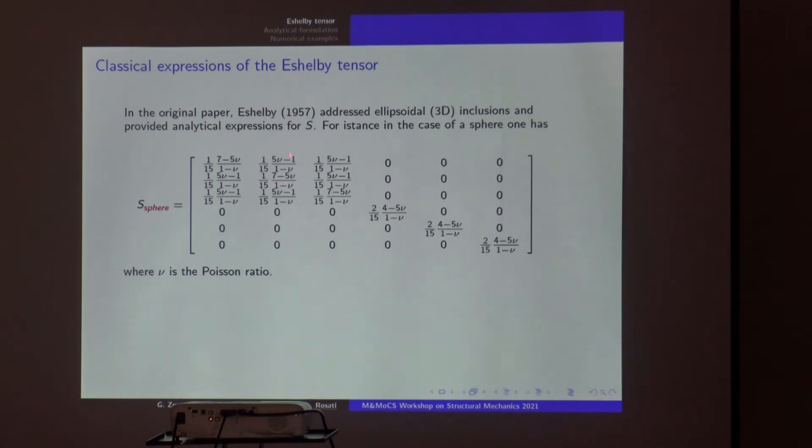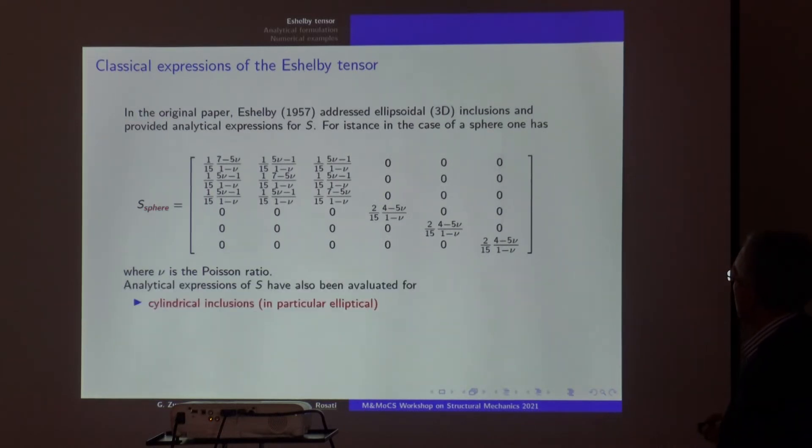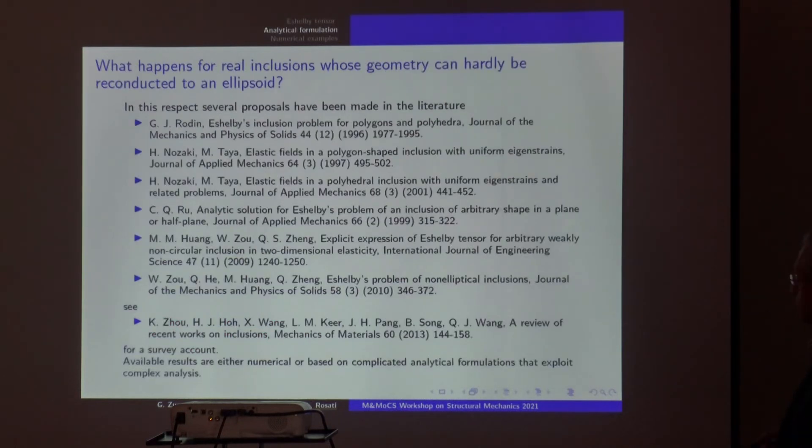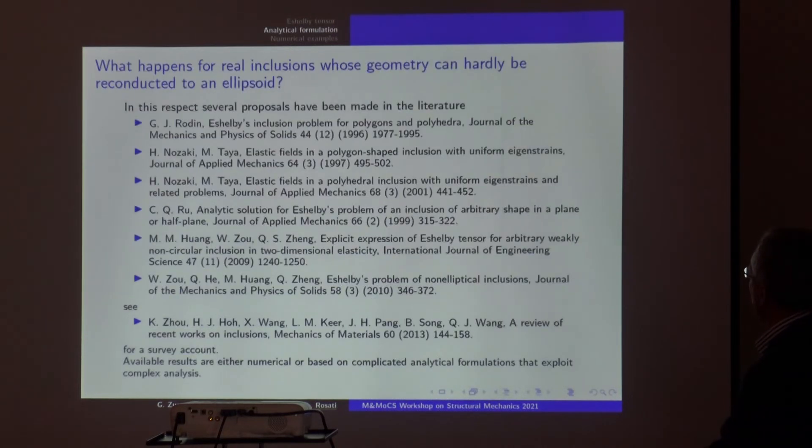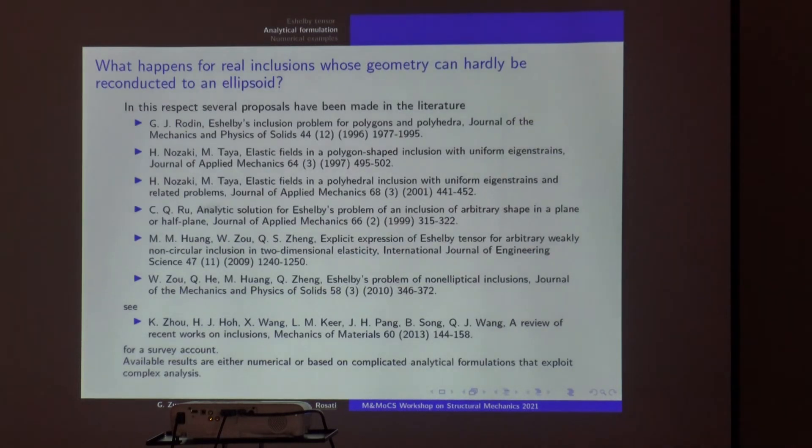For the case of a sphere, you get constant values depending on the Poisson ratio, and you find other expressions, especially in the book by Mura, for cylindrical inclusions, penny-shaped inclusions, needle inclusions, just because they can be derived from the solution related to the ellipsoidal one.